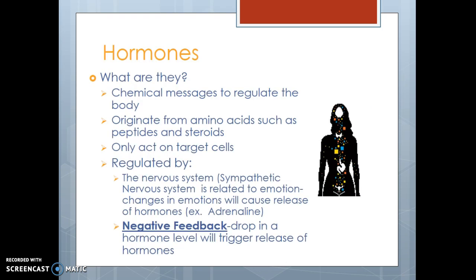Hormones are chemical messengers that regulate our body's homeostasis. They originate from things such as amino acids, peptides, and steroids. They only act on specific target cells. These hormones are regulated as to how they're secreted, how many are secreted, or at what rate they're secreted — regulated by the nervous system, specifically the sympathetic nervous system, which is more related to emotional changes that cause the release of hormones. An example of that is adrenaline.